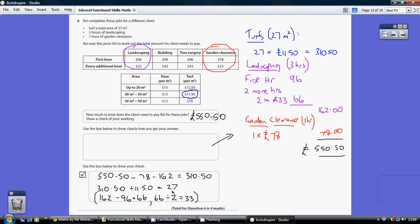Now, various checks you can do. I'm just really working backwards. So I've done this, take away this, take away this to give me my £310. I've then divided my £310 by £11.50 to check I got £27. I also did £162, take away the £96 to make sure I got £66, and then divided that by 2 to make sure I got my £33. So it's just backward checks.